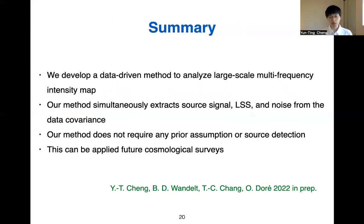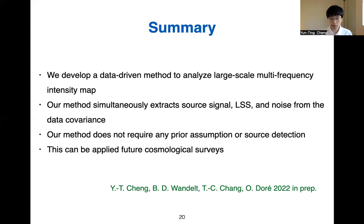In summary, we have developed a new data-driven algorithm to analyze large-scale multi-frequency intensity maps. Our algorithm can simultaneously solve for the input signal — the underlying large-scale structures — and also the noise in the data, directly from the data covariance C_L, which is the combination of all cross-power spectra from observations. We use a totally data-driven approach, so we don't need assumptions like an SED library or extracting bright sources from a map. This will be a very powerful tool to apply to future cosmological surveys, and we are now wrapping up our first proof-of-concept paper. Thank you.